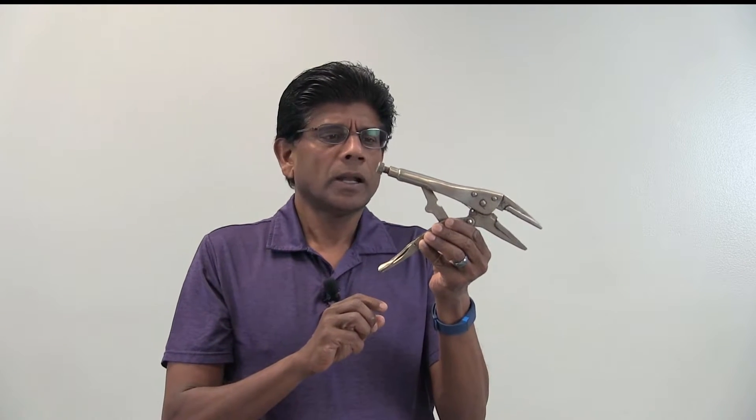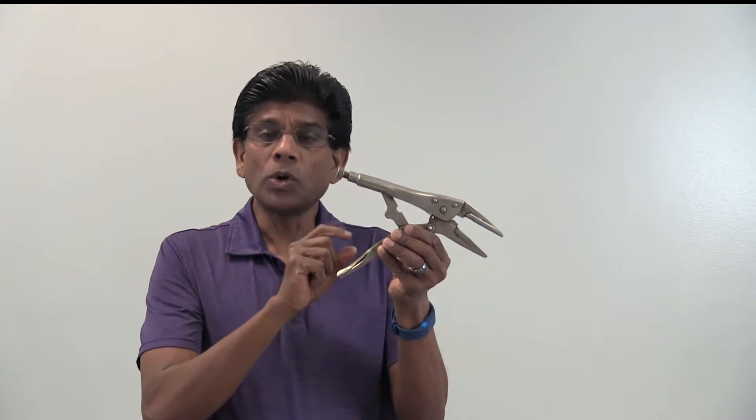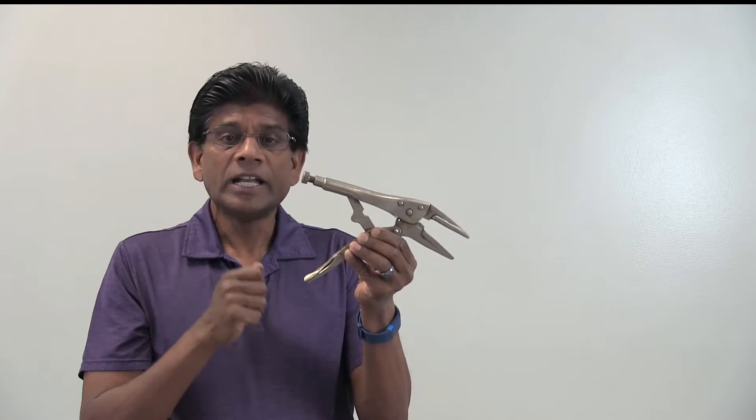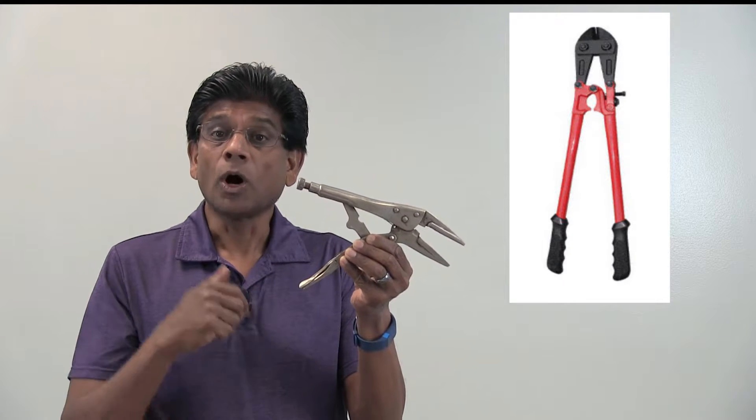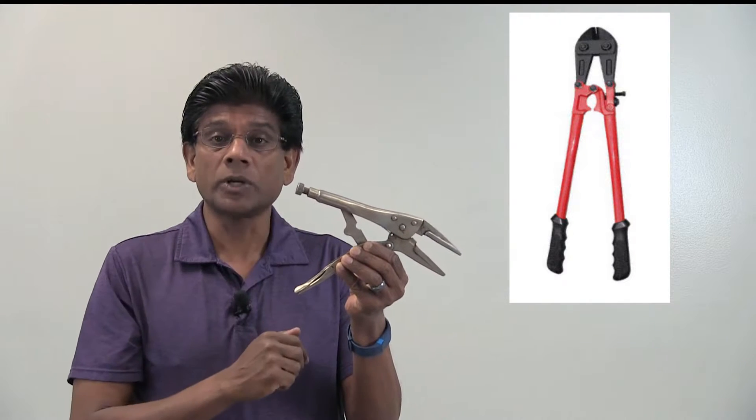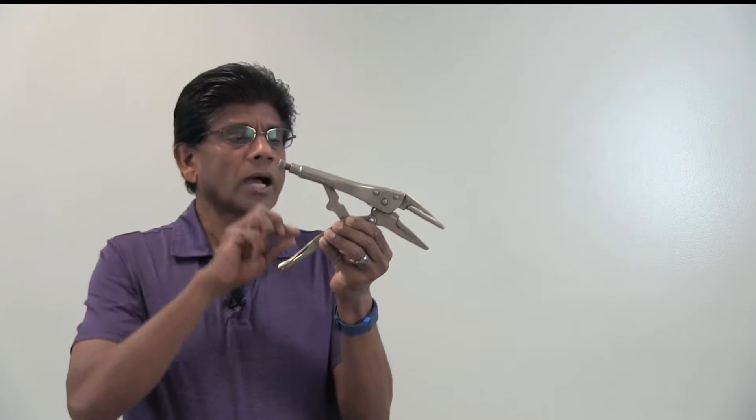Machines can be simple or very complex. Let's take a look at a few machines that we encounter in our everyday life. Here is an example of a locking player. Locking player is used to hold something in place. Devices such as gripping mechanisms or bowl cutters are very similar to locking players.